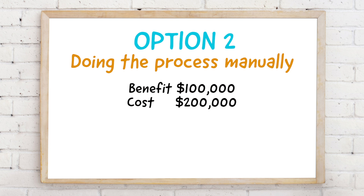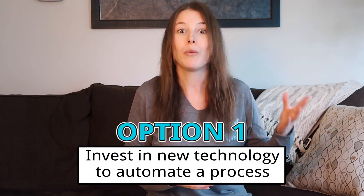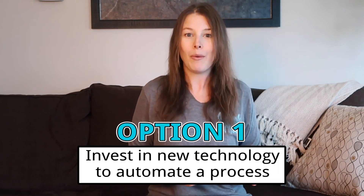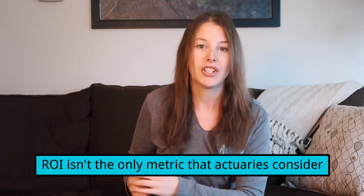Now let's look at option two. The benefit is going to be the same — one hundred thousand dollars — because we're achieving the same goal, just using different methods. But for this one, the cost is going to be two hundred thousand dollars. The ROI calculation gives us a negative 0.5, which means you're actually going to lose money — specifically 50% of your money.